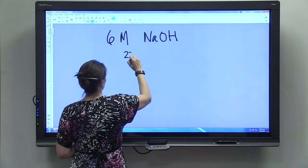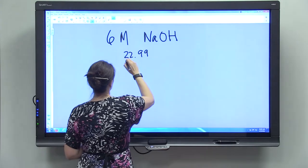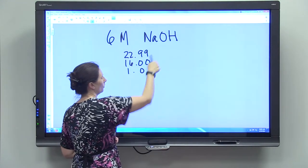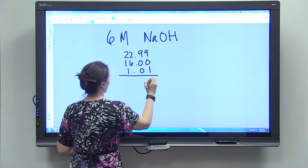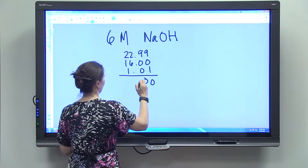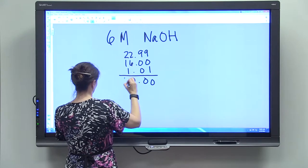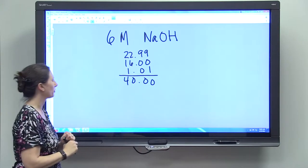So 22.99, 16, 1.01. There's only one of each. Add those up. And we actually get 40.